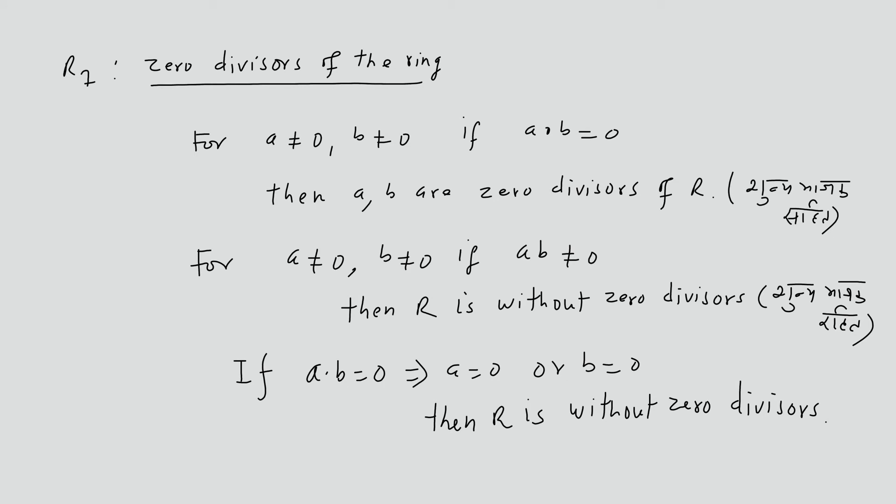R7: Zero Divisors of the Ring. For a ≠ 0 and b ≠ 0, if a·b = 0, then a and b are zero divisors of R. If a·b ≠ 0, then R is without zero divisors. Without zero divisors means a·b = 0 implies a = 0 or b = 0.